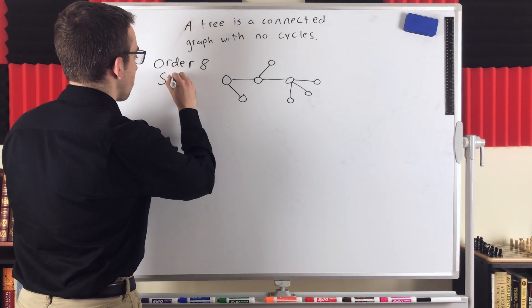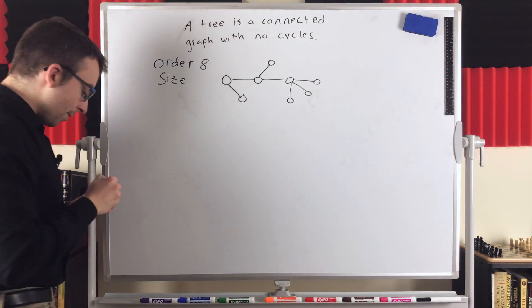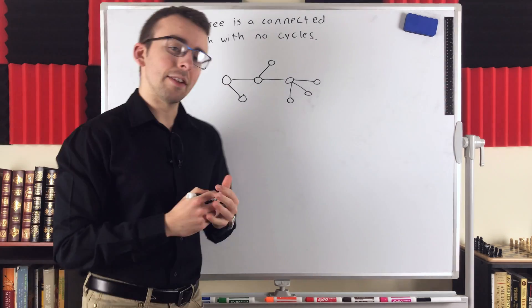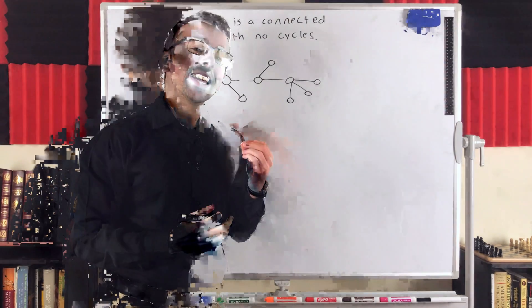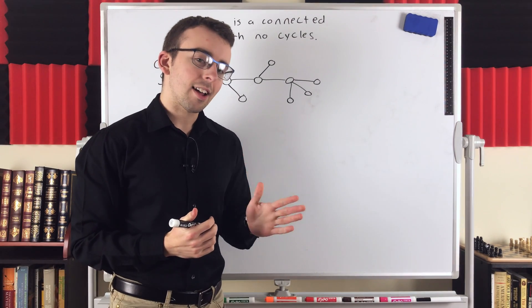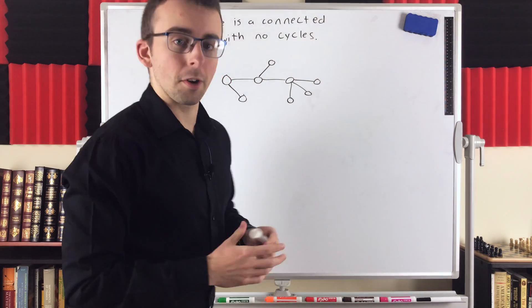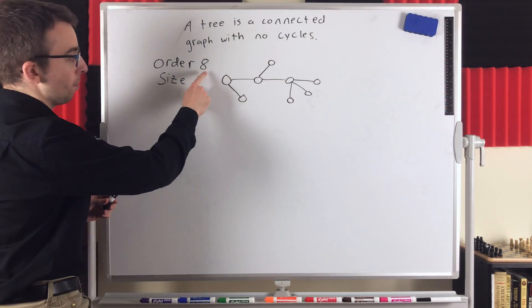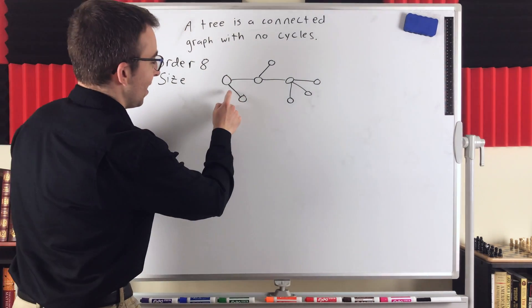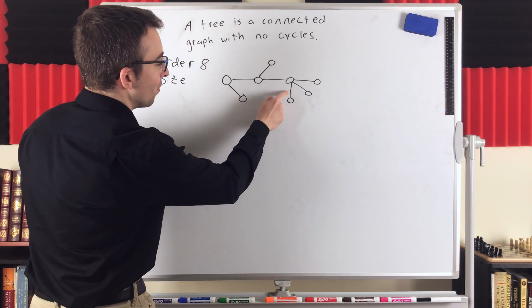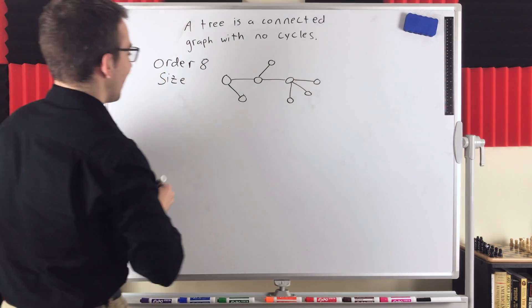Now what about the size of the tree? Well, that's pretty interesting. This is an equivalent definition of a tree, is that it's a connected graph where the size is 1 less than the order. So the size of this graph should be 7. Let's see. 1, 2, 3, 4, 5, 6, 7. Look at that. 7.